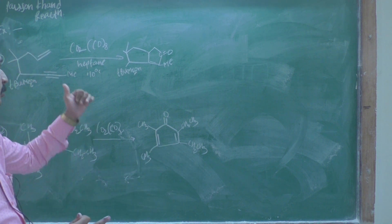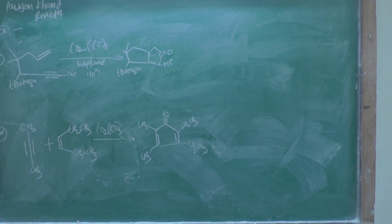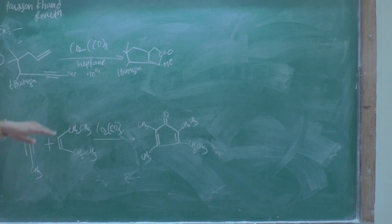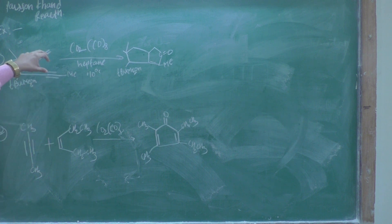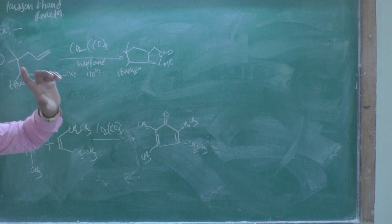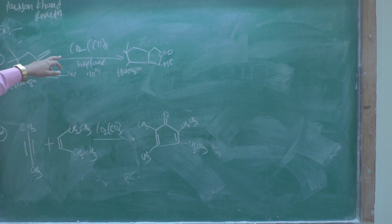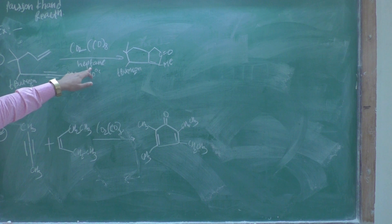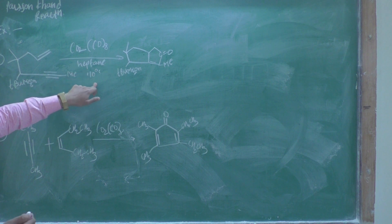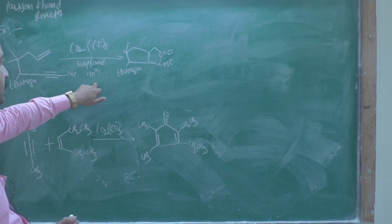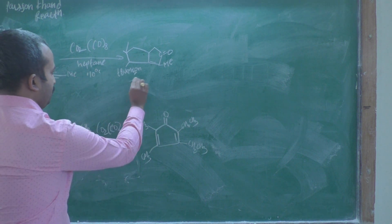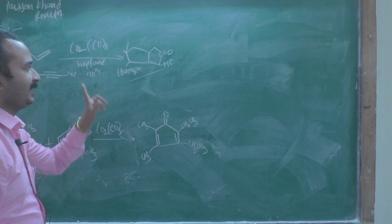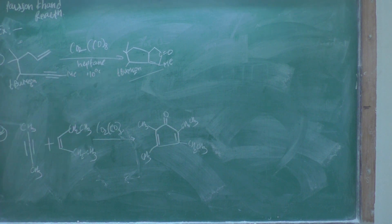We have to carefully discuss this: the alkyne component is combining into one compound. In presence of Co2(CO)8, in presence of heptane at 100 degrees Celsius, this is the product. Now, how is that product formed?